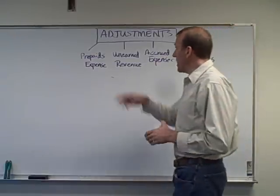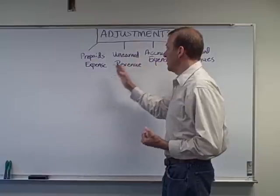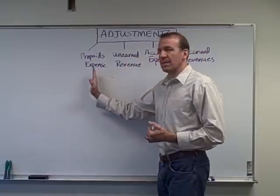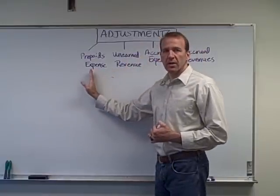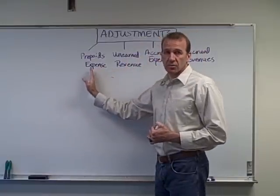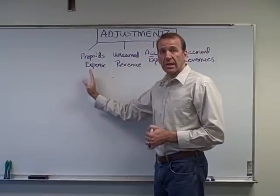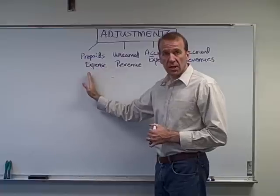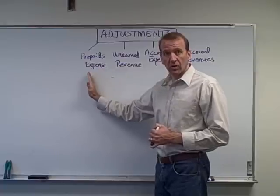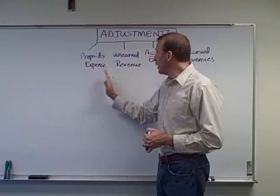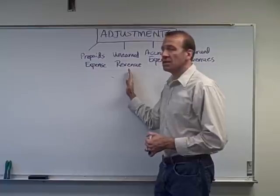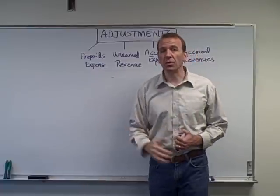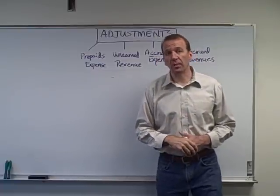We're going to continue on now with our adjustments. We've already talked about prepaids — we've discussed insurance, supplies, and we looked at depreciation expense in its own video. Now we're going to move on to unearned revenues, another adjustment.